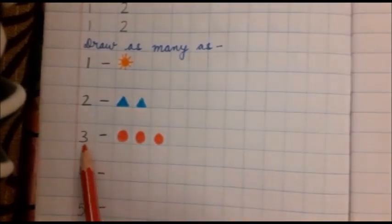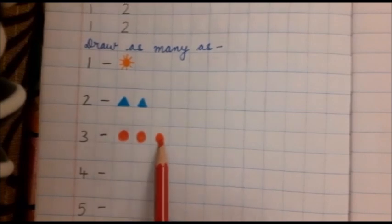Number 3 and 1, 2, 3. Three circles. One box, one object. Ek square mein ek hi object aap draw karoge. Like this.